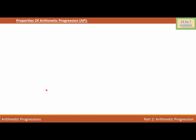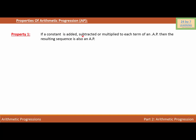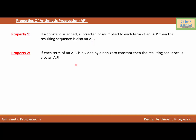Now let's talk about some properties of arithmetic progression. Property 1: If a constant is added, subtracted, or multiplied to each term of an AP, then the resulting sequence is also an AP. It does not matter whether we add, subtract, or multiply a constant with all the elements — the sequence is still an arithmetic progression. Property 2: If each term of an AP is divided by a non-zero constant, then the resulting sequence is also an AP. Property 3...